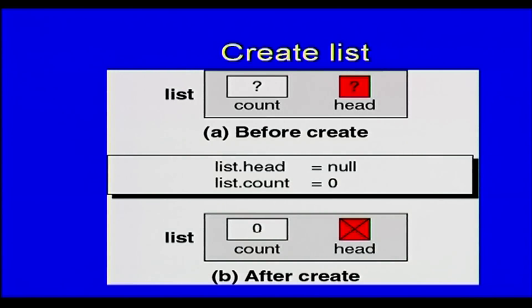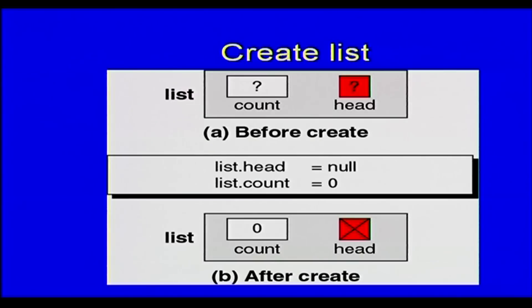Let us look at how to create a list. We have a head node which consists of the count of the number of elements and a pointer to the first node. Before you start, the count is undefined and the head points nowhere. To create an empty list, you set the head pointer equal to null and set the count equal to 0. After the creation operation, count equals 0 and head is null — the number of elements is still 0 and you have just created the head node.